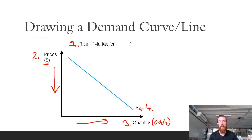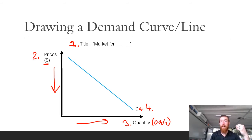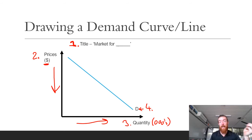A lot of people remember that the demand curve goes downwards because it starts with a 'D' — and so does 'down.' If that memory trick works for you, you might as well use it.